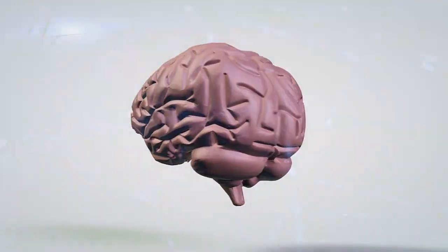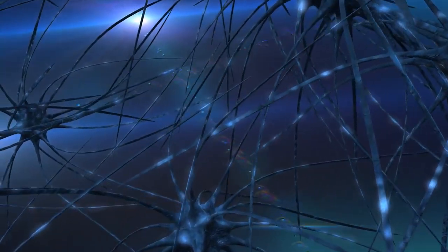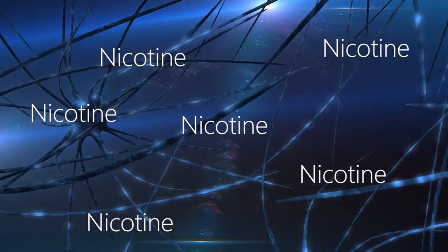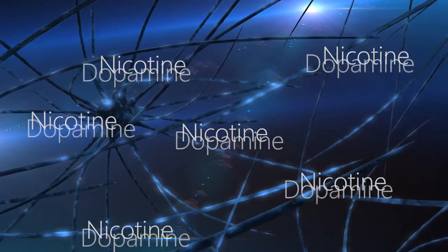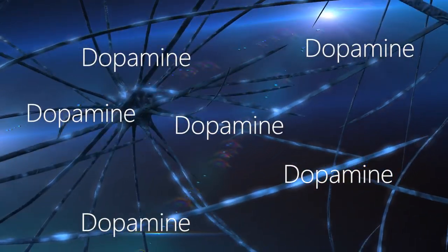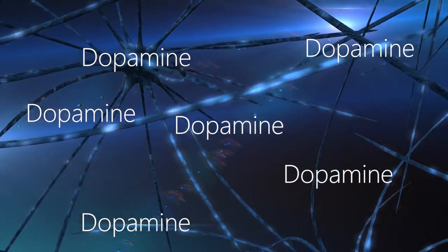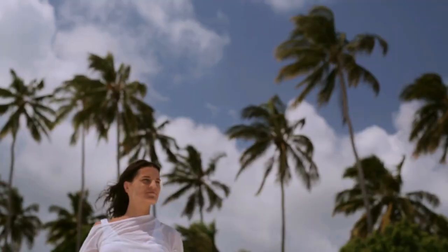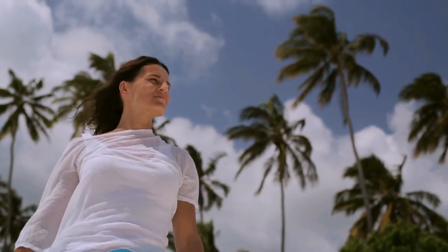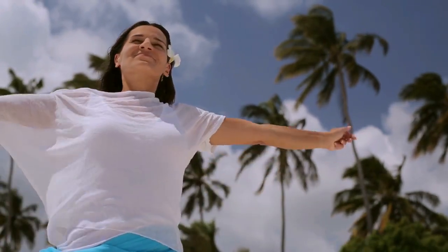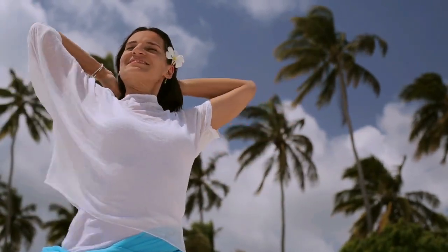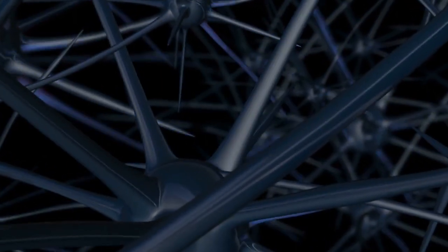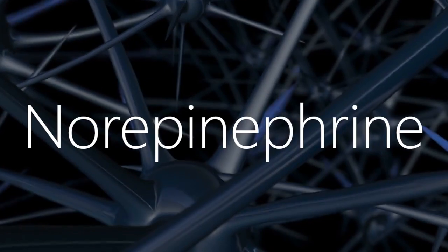Nicotine attaches to nicotine receptors in the brain. This attachment leads to the release of dopamine in the areas of the brain associated with pleasure and reward. The release of dopamine causes the pleasant effects associated with smoking.